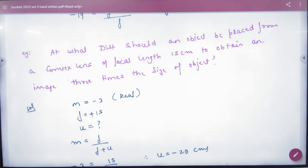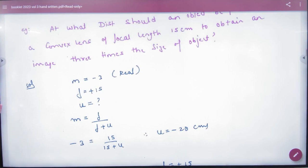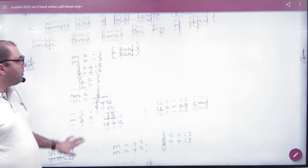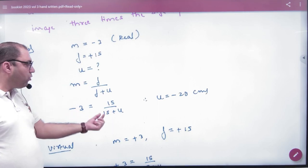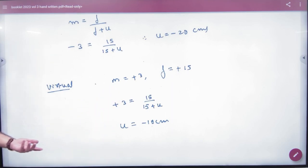Focal length is positive for convex lens. There is no hint whether it is virtual or real. If I am not telling you, then you have to do both cases: real and virtual. Both cases will appear in objective questions. For real case, magnification is minus 3. For virtual case, magnification is plus 3. Focal length is always positive. So find U using the formula. In one case, magnification is minus 3, and in the other case, magnification is plus 3. Take out the answer for both. If you don't know which case, do two cases.